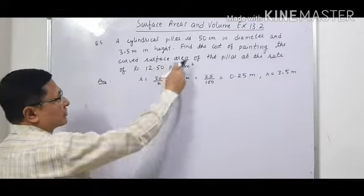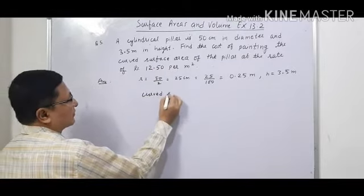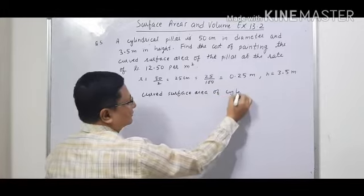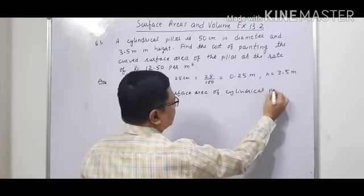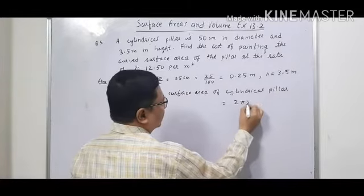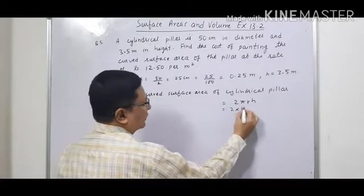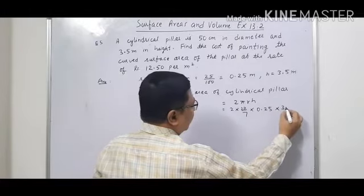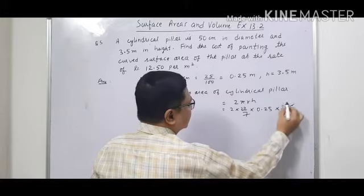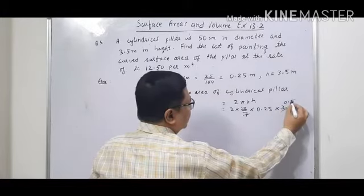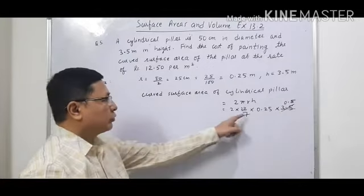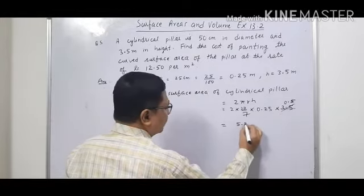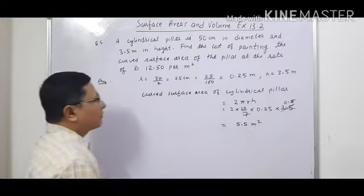Now let us find first the curved surface area of the cylindrical pillar. That is equal to the formula 2πrh, that is 2 into 22 upon 7. R is 0.25 meter and height is 3.5 meter. When we cancel this, 3.5 divided by 7 will become 0.5. Now let us solve this: 2 into 22 into 0.25 into 0.5. When we multiply, we will get the answer that is equal to 5.5 meter square.